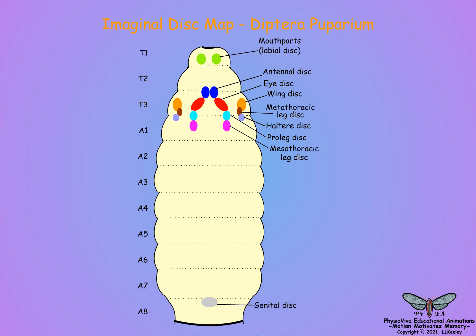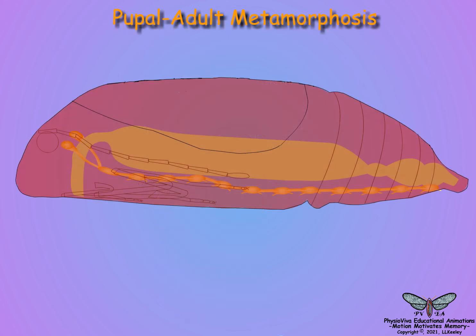Imaginal discs are paired groups of dedicated cells set aside during embryogenesis that multiply during the larval instars and develop into adult structures during pupal-adult metamorphosis. During metamorphosis, the nervous system is restructured to form antennal and optic lobes in the brain and shows a forward fusion of the larval thoracic and abdominal ventral ganglia to accommodate the newly forming adult musculature.